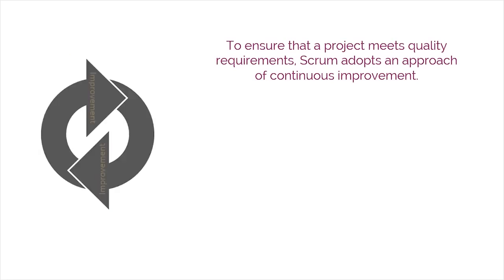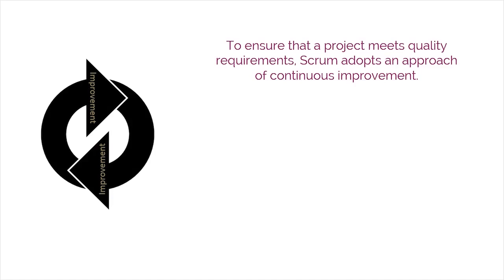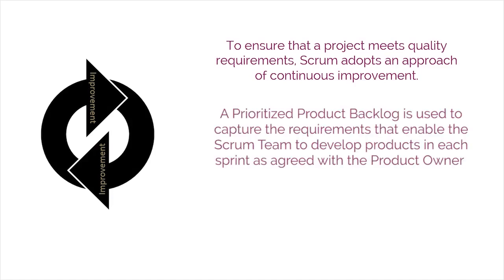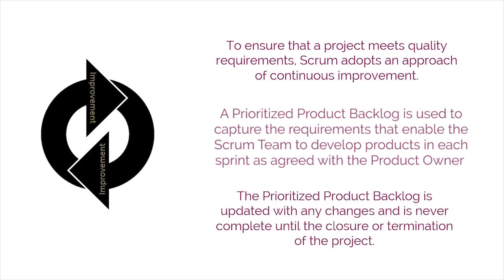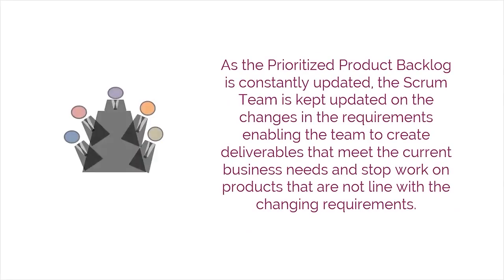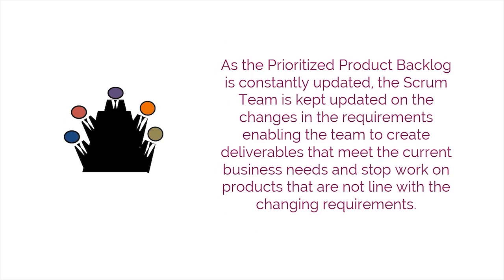To ensure that a project meets quality requirements, Scrum adopts an approach of continuous improvement whereby the team learns from experience and stakeholder engagement. A prioritized product backlog is used to capture the requirements that enable the Scrum team to develop the product in each sprint as agreed with the product owner. The prioritized product backlog is updated with any changes in requirements and is never considered complete until the closure or termination of the project. As the prioritized product backlog is constantly updated, the Scrum team is kept updated on the changes in requirements, enabling the team to create deliverables that meet the current business needs and stop work on products that are not aligned with the changing requirements.